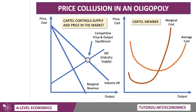Where supply meets demand would be the competitive price and output equilibrium, but that won't be the price the cartel charges. The cartel controls supply and therefore acts as if it were a monopolist. Typically, the cartel fixes output where marginal cost meets marginal revenue, maximizing profits for the cartel. This allows them to go up to the demand curve and set the cartel price. The more price inelastic the demand curve, the higher the price the cartel can charge.